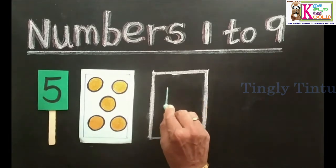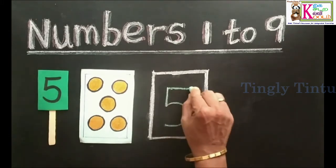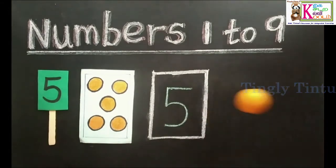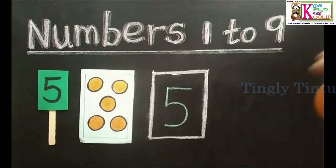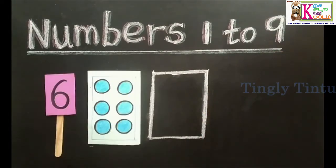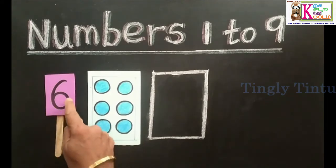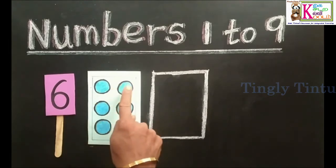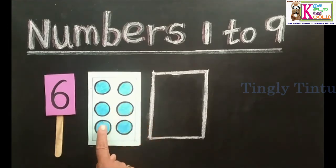Standing line, right semicircle, sleeping line. 5. Come down. Round. 6. 6. 1, 2, 3, 4, 5, 6. 6 candies.